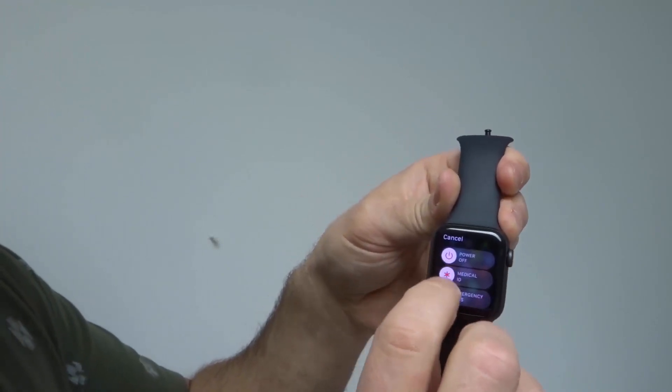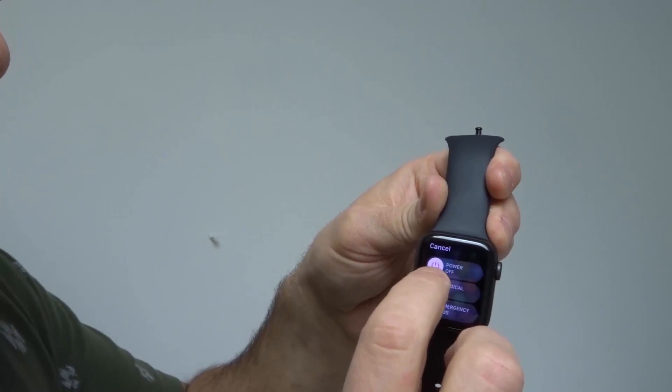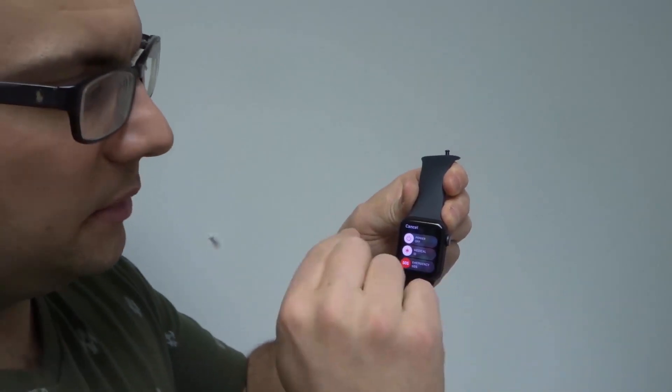And what you can do is power the Apple Watch Series 6 off. So slide that power off option. I'm not going to do it because I don't want to turn it off. But slide that power off option across. Okay, it's going to turn off the watch. Then to turn it back on,